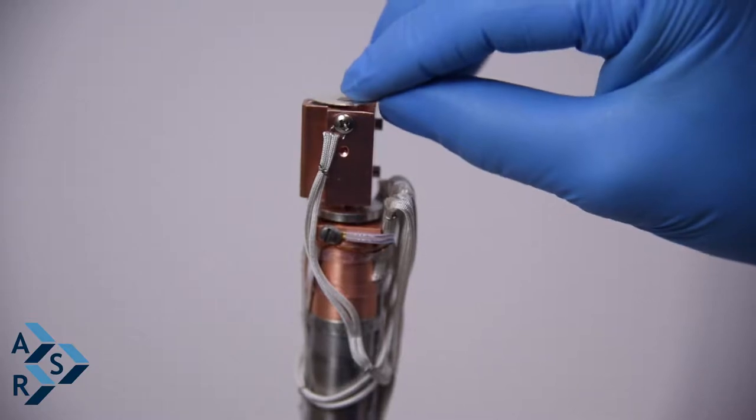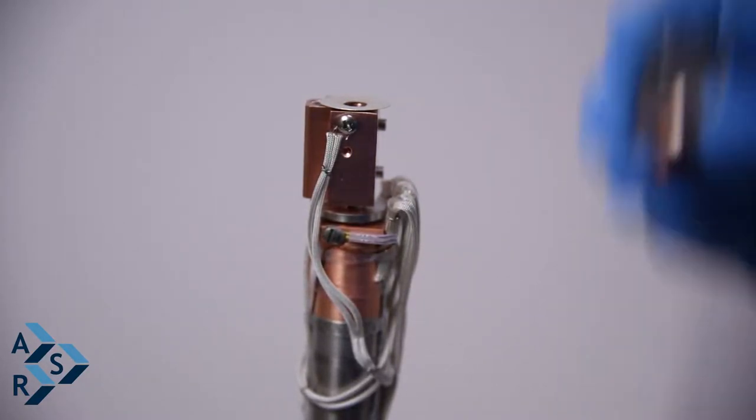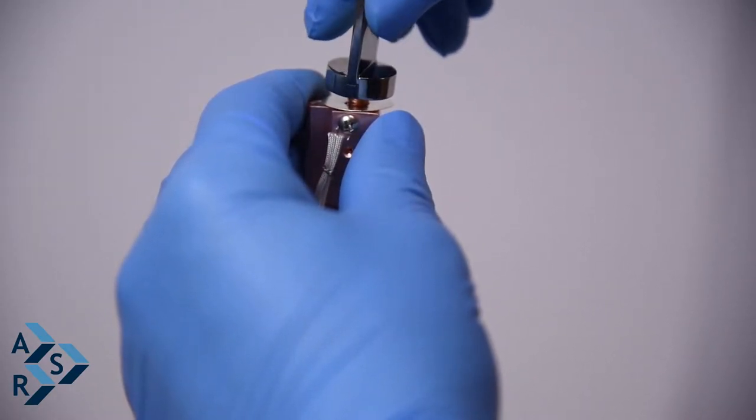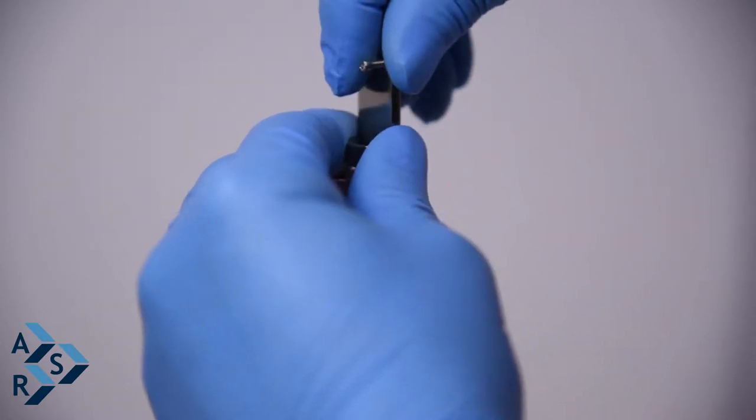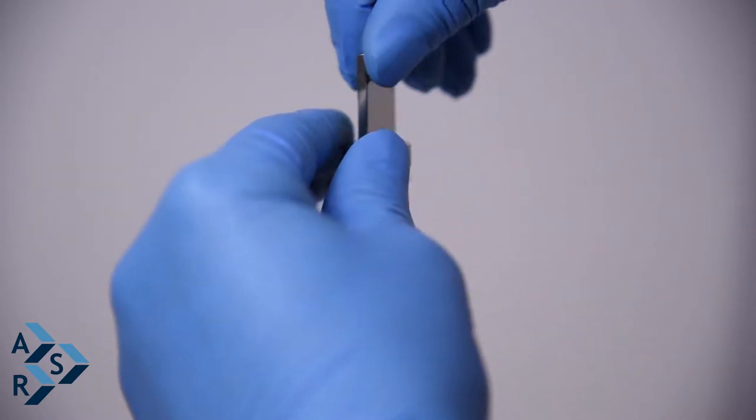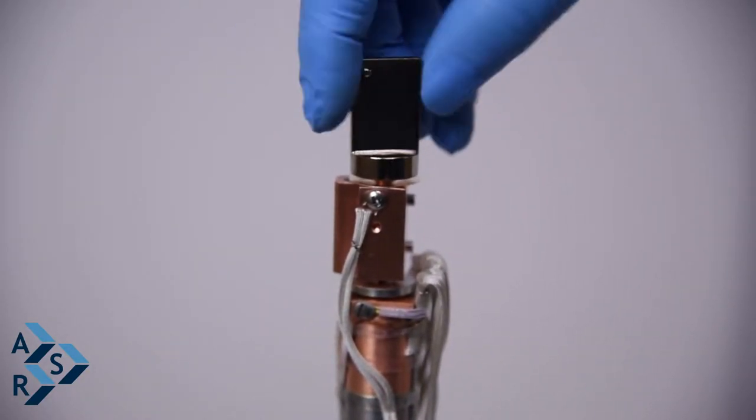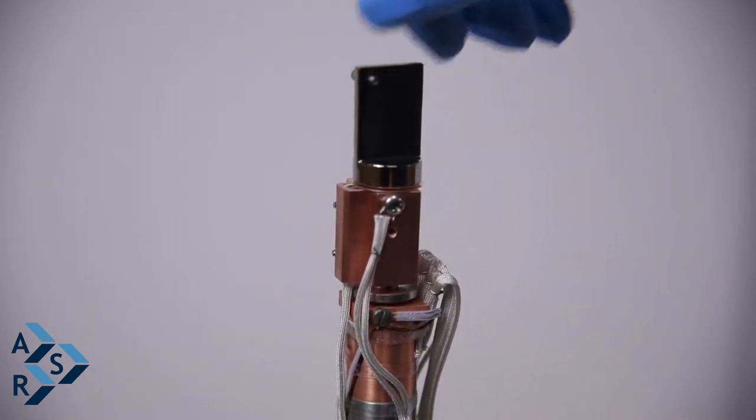So you have to use this silver gasket. Take your sample holder and start a few threads. Get it started, and when you turn it by hand, get it close to the position.